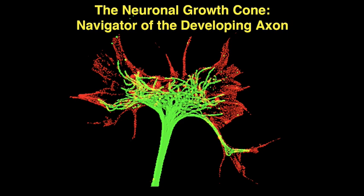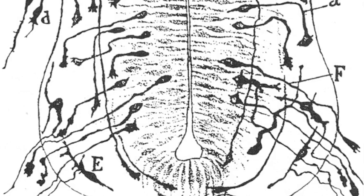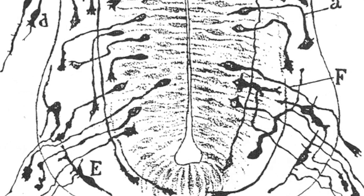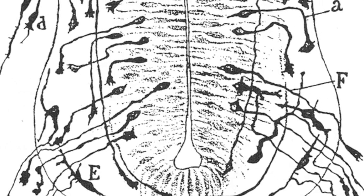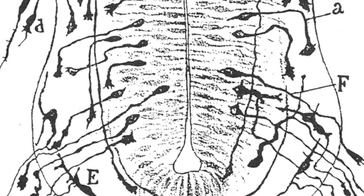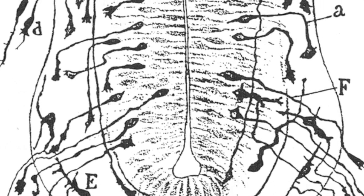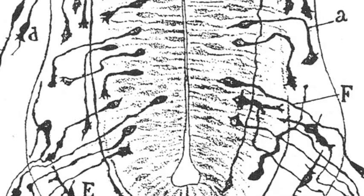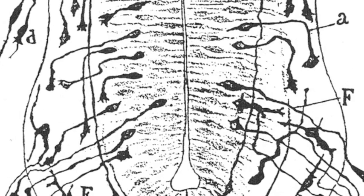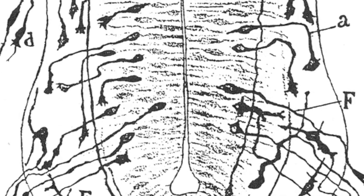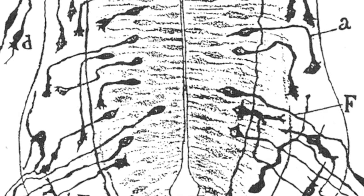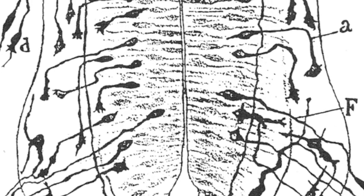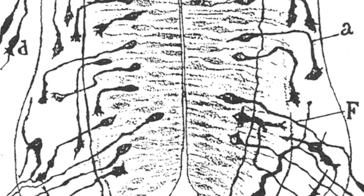The Spanish neuroscientist Santiago Ramón y Cajal was the first person to see growth cones in fixed tissues. However, he imagined the vitality of growth cone movements in living embryos.